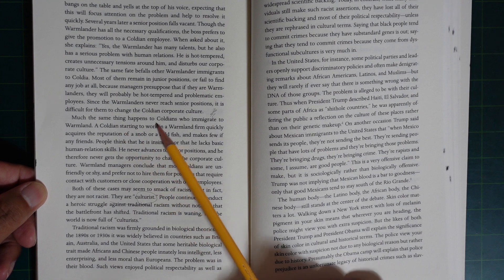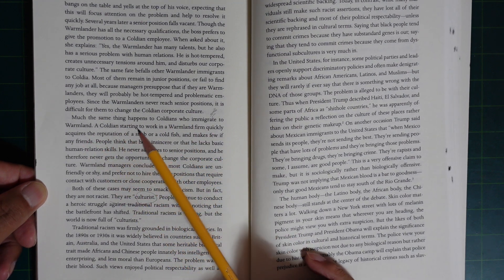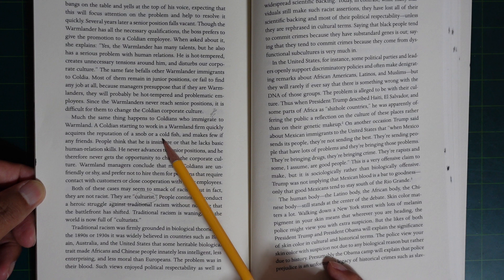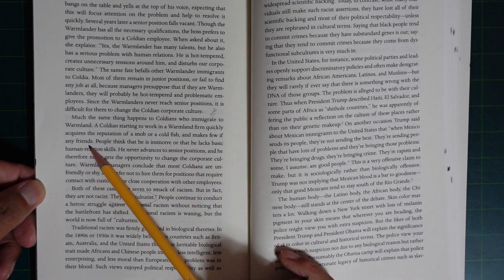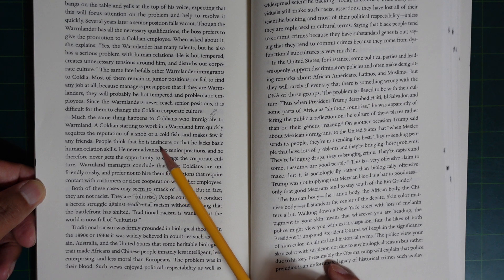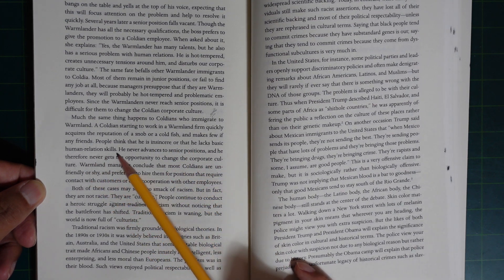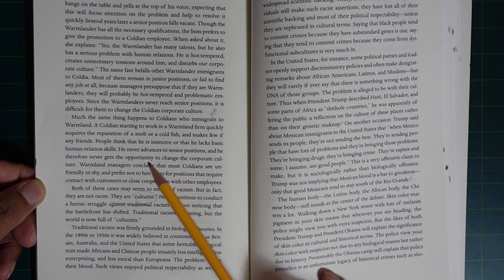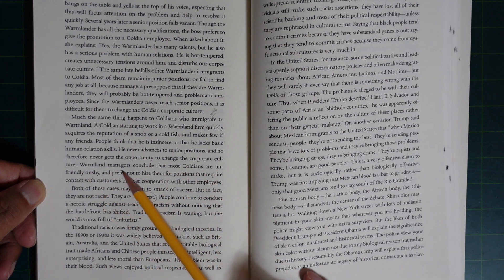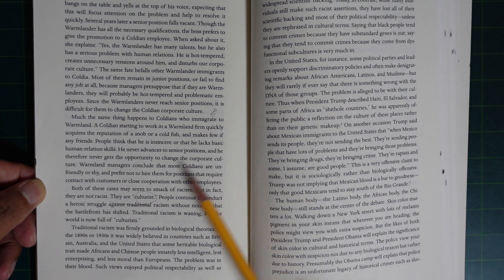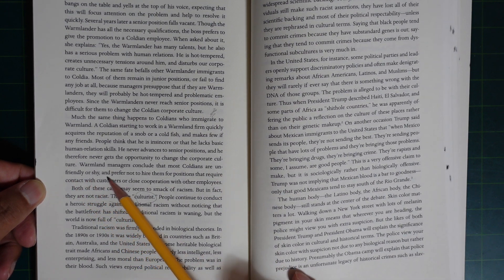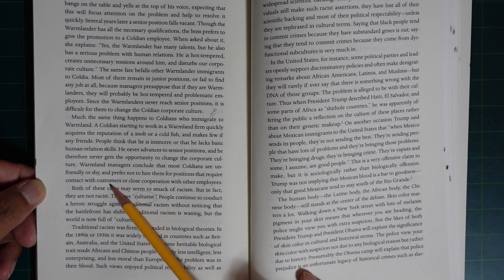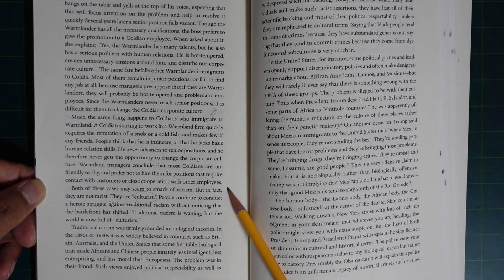Much the same thing happens to Coldeans who immigrate to Warmland. The Coldeans start working in Warmland firms and quickly acquire the reputation of being snappy or cold fish, and make few if any friends. People think that they lack basic human relations skills. They never advance to senior positions and therefore never get the opportunity to change the corporate culture in Warmland. The Warmlanders conclude that most Coldeans are unfriendly or shy, and prefer not to hire them for positions that require contact with customers or close cooperation with other employees.